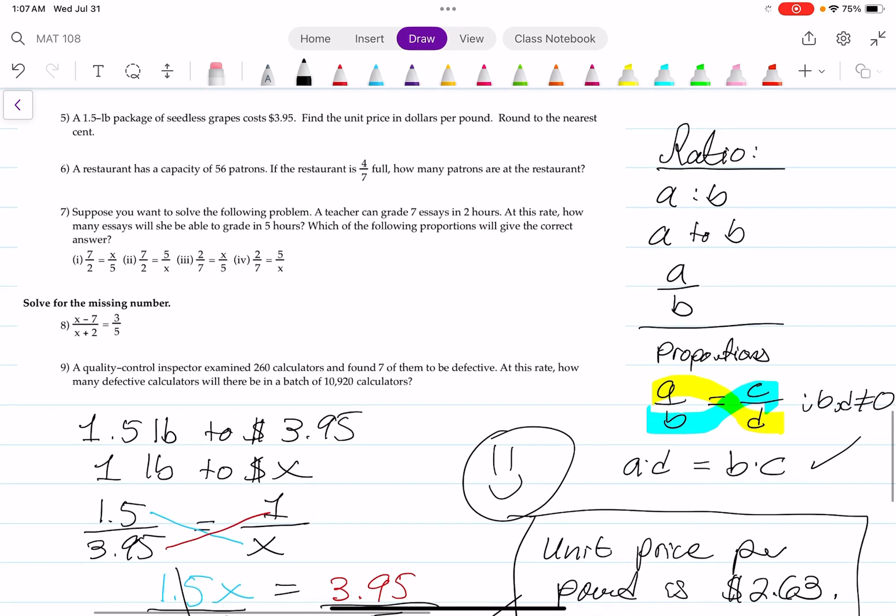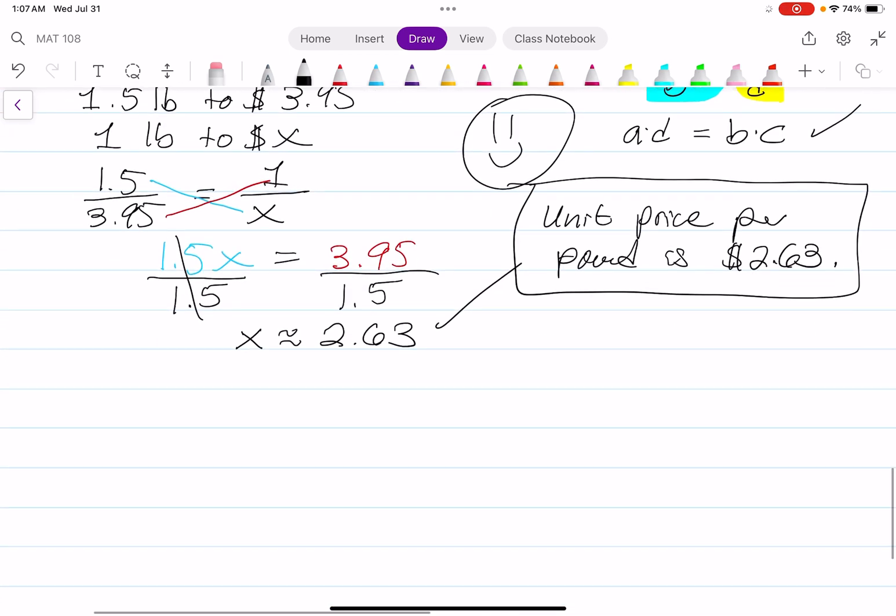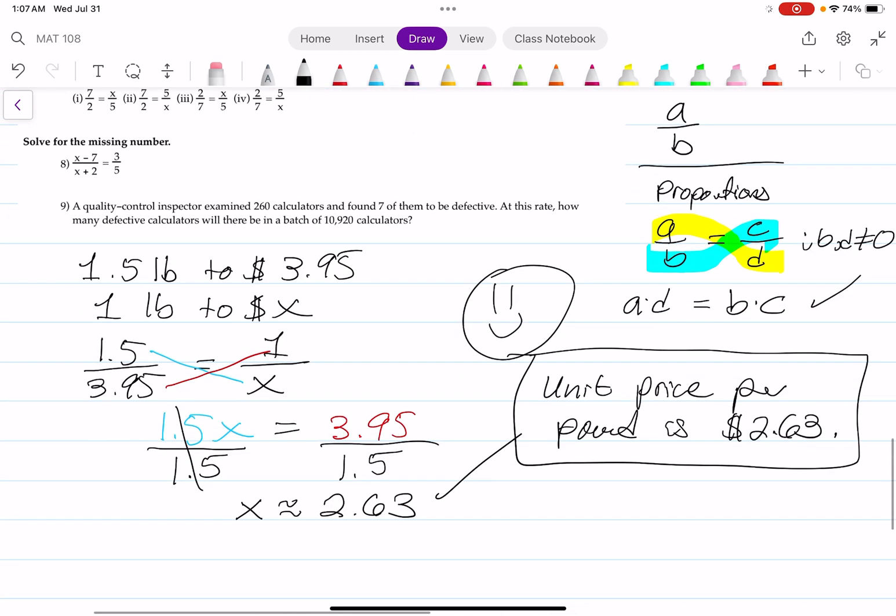Let's do number 6. Number 6 says a restaurant has a capacity of 56 patrons. If the restaurant is four-sevenths full, how many patrons are at the restaurant? That's another ratio right there, another set of proportions. This is number 6.